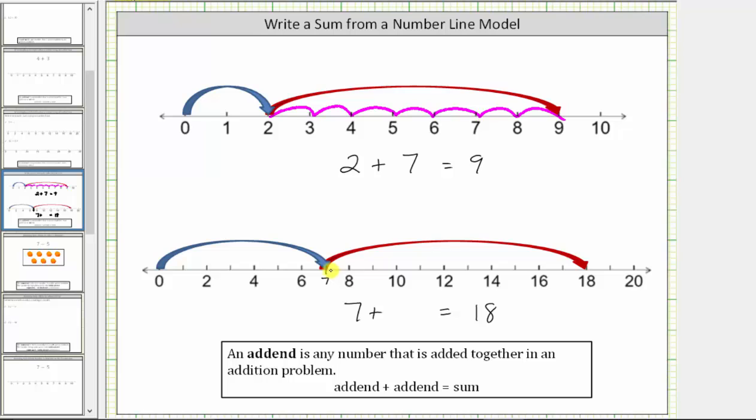So starting at seven, we count one, two, three, four, five, six, seven, eight, nine, ten, eleven units.